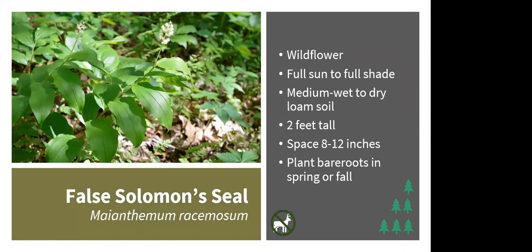False Solomon's seal — also called Solomon's plume — has foliage similar to Solomon's seal, but its flowers form a cluster at the tip of the plant rather than hanging under the leaves. It does well in full sun to full shade with medium-wet to dry soil, and is slightly shorter at about 2 feet. It spreads slowly through rhizomes. There's a similar plant called starry Solomon's plume that spreads much more aggressively — a good choice if you want quick ground cover. Note that deer will browse the true Solomon's seal but typically not false Solomon's seal.